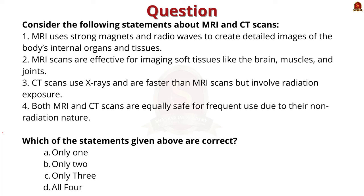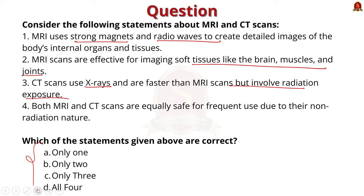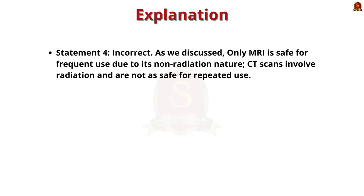Consider the following statements about MRI and CT scans: 1. MRI uses strong magnets and radio waves to create detailed images of the body's internal organs and tissues. 2. MRI scans are effective for imaging soft tissues like the brain, muscles, and joints. 3. CT scans use X-rays and are faster than MRI scans, but involve radiation exposure. 4. Both MRI and CT scans are equally safe for frequent use due to their non-radiation nature. Which of the statements given above are correct? Option A: only 1. Option B: only 2. Option C: only 3. Option D: all 4. The correct answer is Option C, only 3 — wait, it should be statements 1, 2, and 3 are correct. Actually the answer given is Option C, only 3 correct statements (1, 2, 3). Statement 4 is incorrect because only MRI is safe for frequent use due to its non-radiation nature; CT scans involve radiation and are not safe for repeated use. If you like this video, please hit like, share and subscribe. Thank you.